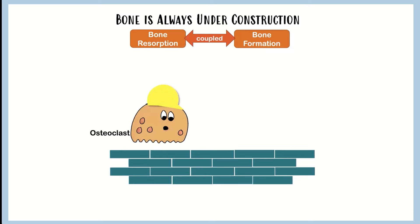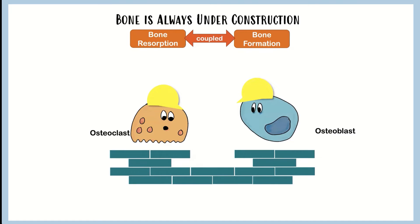When it comes to bone resorption, we have our osteoclast that comes along and makes little pits in the bone. The way it does that is it produces proteolytic enzymes and also secretes hydrochloric acid, so it's going to dissolve that bone down and make these little pits. And then once it's done that, the osteoblast comes along and pours the cement - pours some new bone in there. So perfect osteoblast, osteoclast working together.